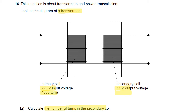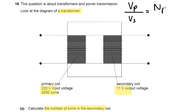Hopefully you've found the equation. The equation is actually written in words, but I'm going to write it in algebra because it is a little bit easier to use. Voltage across the primary coil divided by voltage across the secondary coil equals the number of turns on the primary coil divided by number of turns on the secondary coil. This means the ratio of the voltages from primary to secondary is the same as the ratio of turns from primary to secondary.